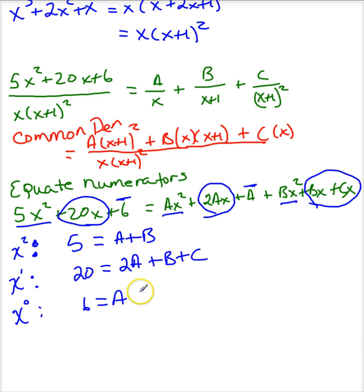So I have a is 6. So I'm going to come back up here. And if a is 6, then 5 is 6 plus b. So b is negative 1.